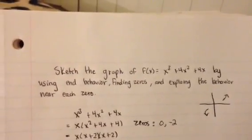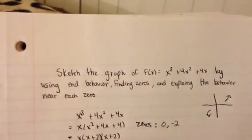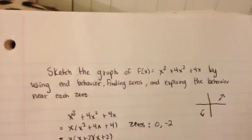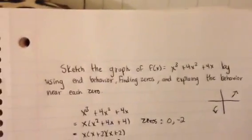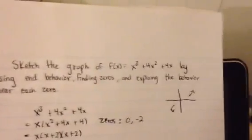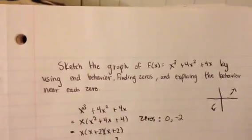I got number 8 in the practice test. It says to sketch the graph of f of x equals x cubed plus 4x squared plus 4x by using end behavior, finding zeros, and explaining the behavior near each zero.